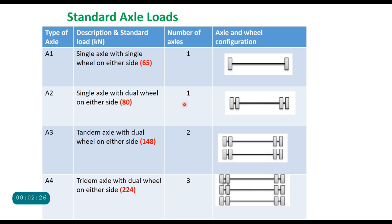Standard axle loads as defined in India are of four types: A1, A2, A3, and A4. A1 type of axle is a single axle with a single wheel on either side, and the standard load for this configuration is 65 kN. A2 is a single axle with a dual wheel assembly on either side, and the standard axle load for this assembly is 80 kN. A3 is a tandem axle with single wheel on either side, and the standard load for this is 148 kN. A4 is a tridem axle with dual wheel on either side — the number of axles here are three — and the standard axle load is 224 kN.